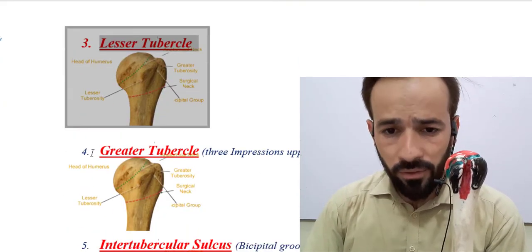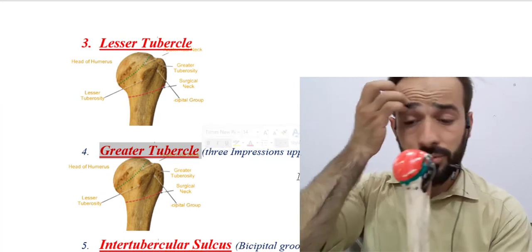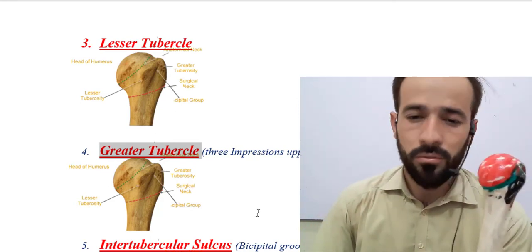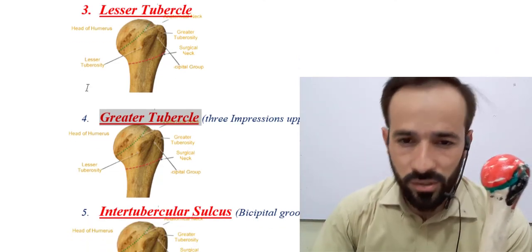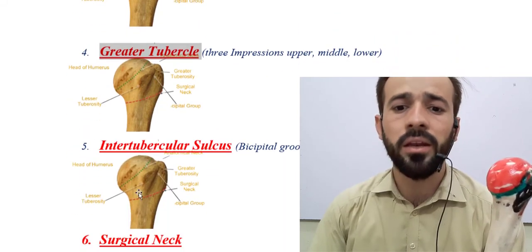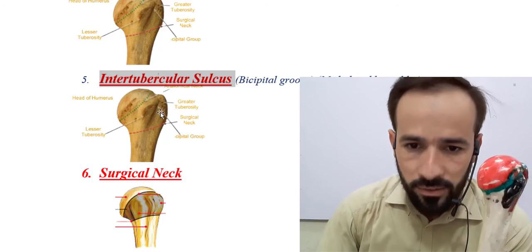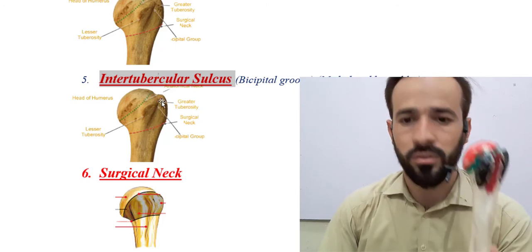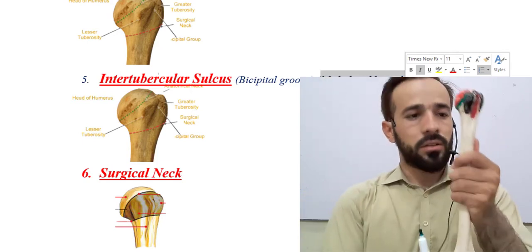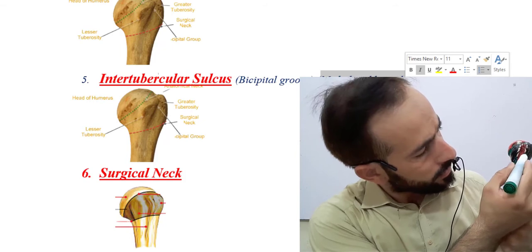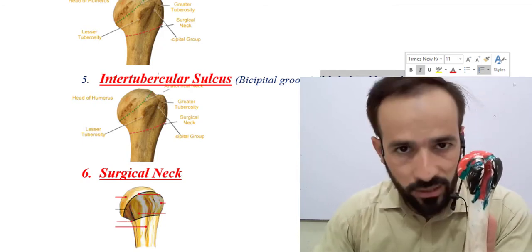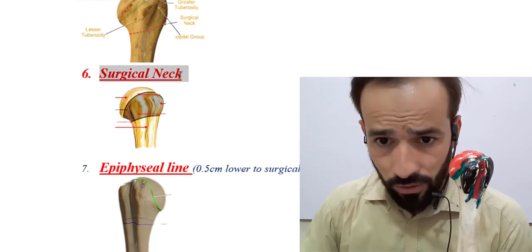The greater tubercle has three impressions — upper, middle, and lower — for attachments of ligaments and tendons, which will be discussed in the myology section. The intertubercular sulcus, or bicipital groove, has a medial lip and a lateral lip. You can see both lips clearly on the bone.